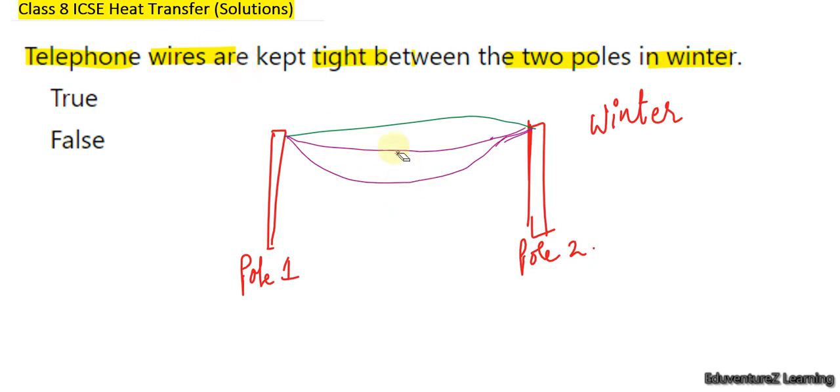It is necessary to keep the wires tight between the two poles if we are making this in winter, so that in summer they might gain length, their length may increase, and there is a little bit increase in length but it is not affecting our construction. Telephone wires should be kept tight between two poles in winter. This is true.